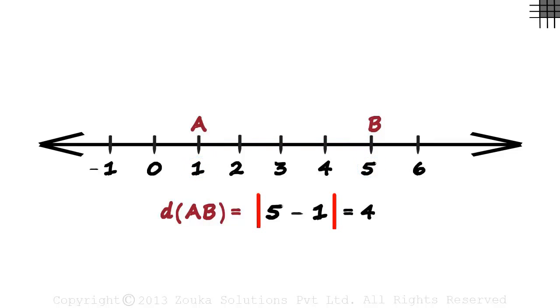Remember, it's the absolute value of the difference. So it can also be written as absolute value of one minus five. The absolute value ignores the sign of the number, so even absolute value of one minus five will equal four. But it is always a good practice to subtract the smaller number from the larger number.